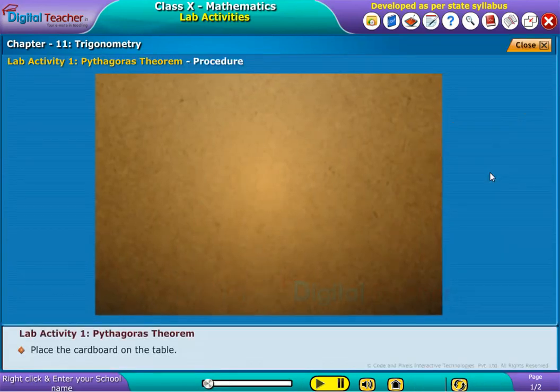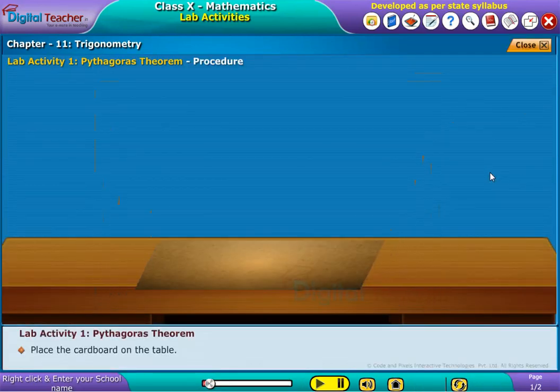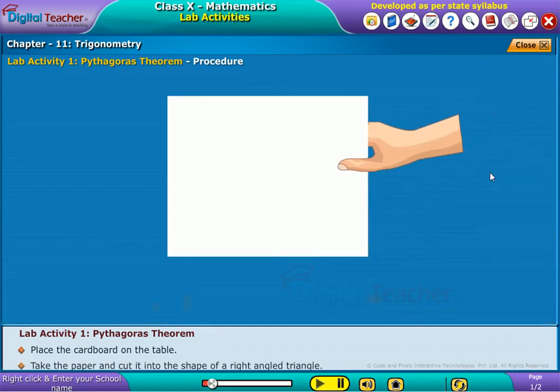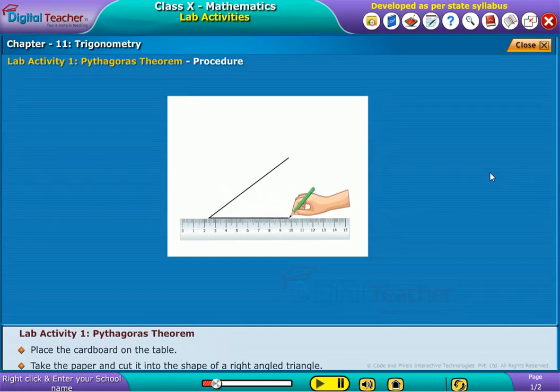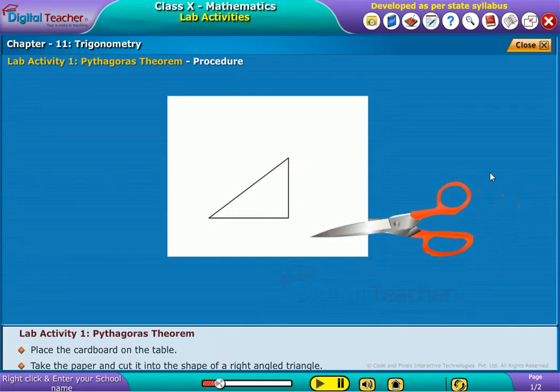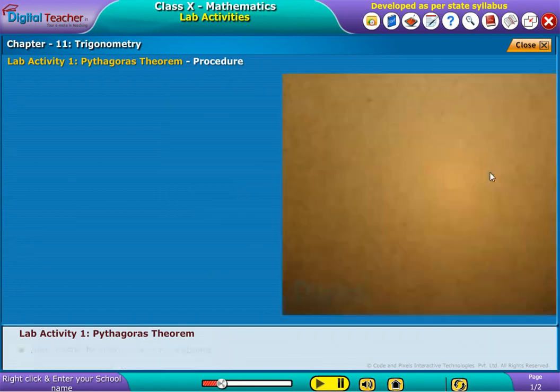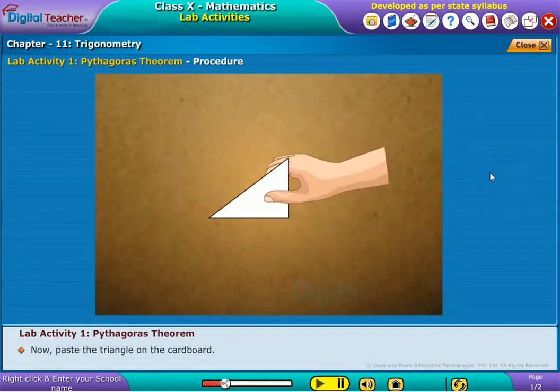Place the cardboard on the table. Take the paper and cut it into the shape of a right angle triangle. Now paste the triangle on the cardboard.